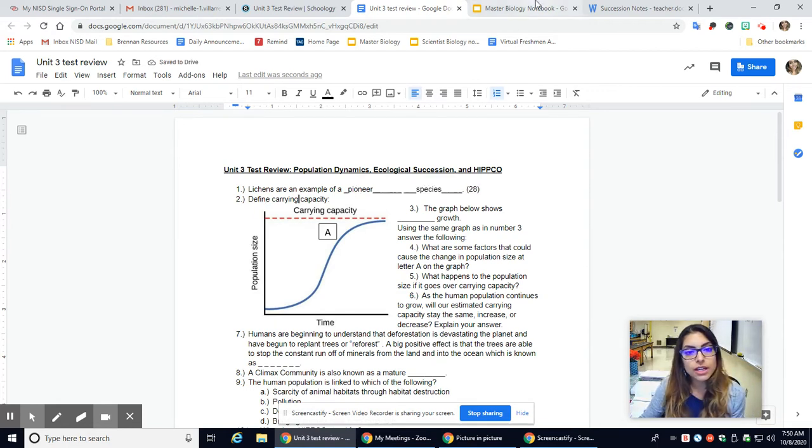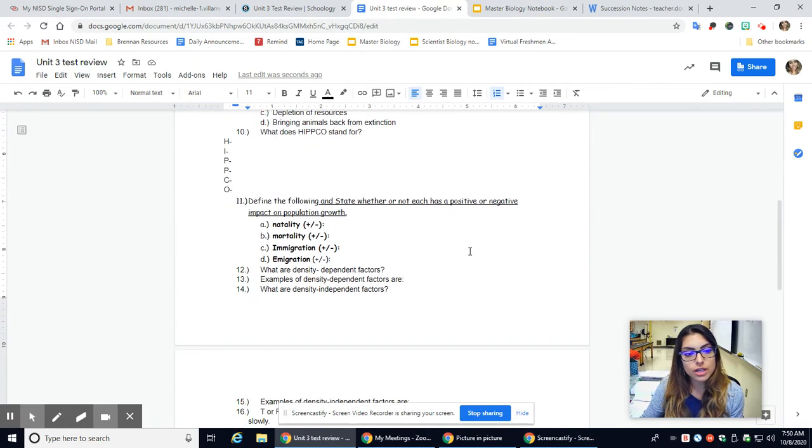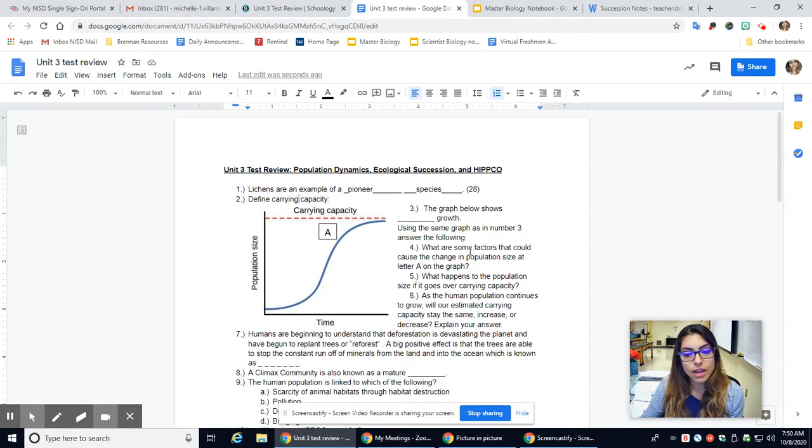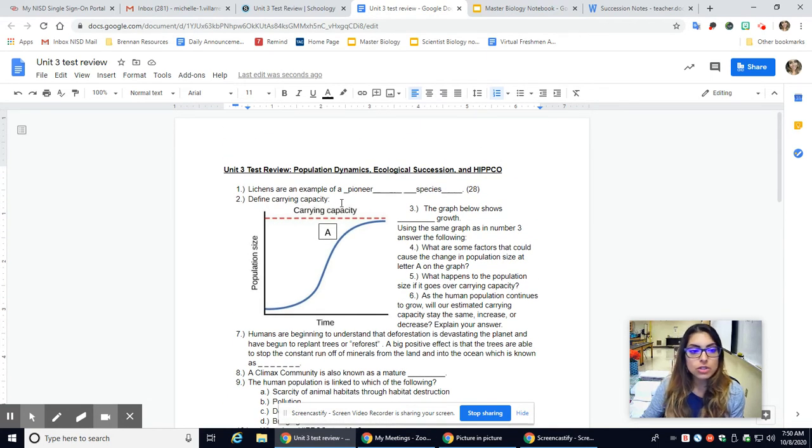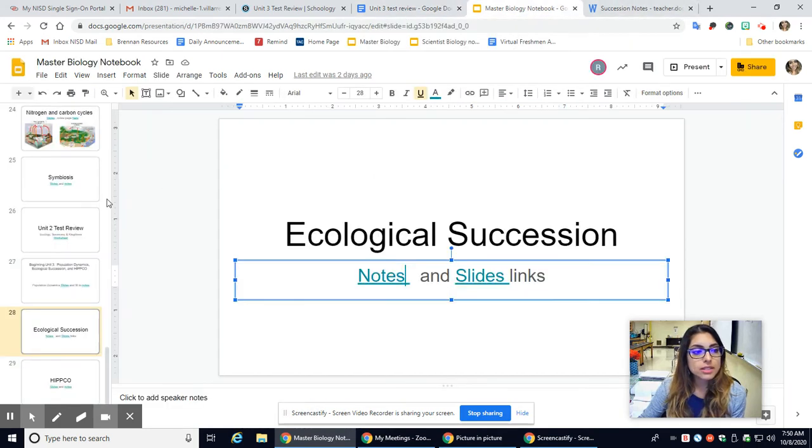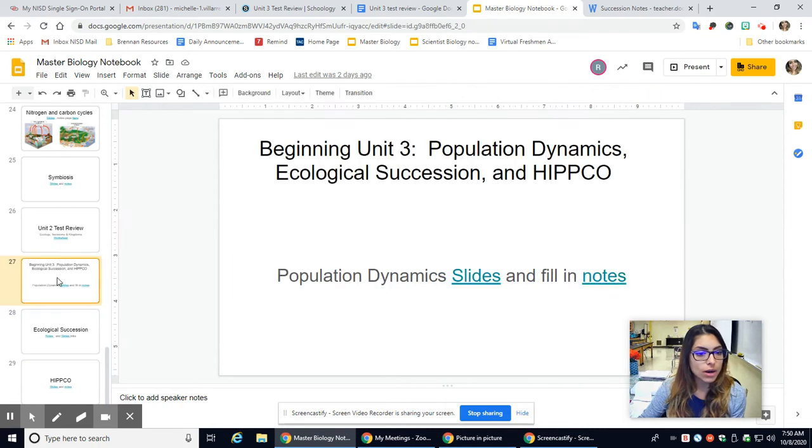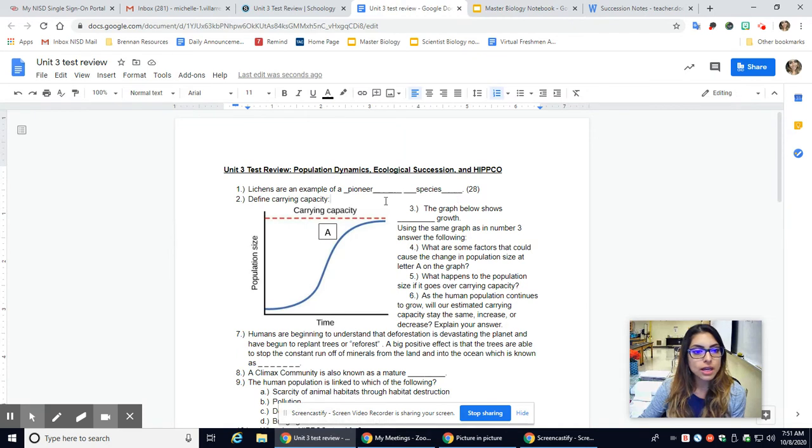Number two, define carrying capacity. Now, scientists, I'm not going to go through this entire thing and give you all of your answers. However, I am going to show you where to find your information. Remember that capacity is my maximum amount of organisms that I can support in any given area or any given ecosystem. Carrying capacity is going to be a question about population dynamics. So this is going to be found in slide 27.